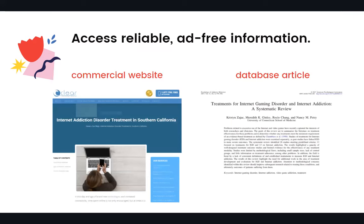Library databases allow you to access reliable, ad-free information that may be less biased and more authoritative than information found on commercial websites. Here's an example of two sources on the topic of internet addiction disorder treatment. The one on the left is a website for a rehabilitation facility, and the one on the right is a scholarly journal article from a database. The rehab center has a financial stake in convincing visitors they may need treatment for internet addiction disorder, so the information it provides on its website could be biased.